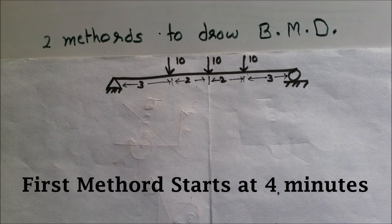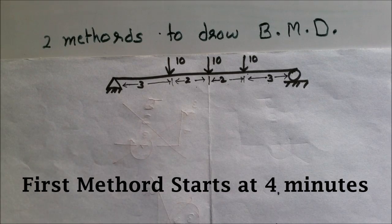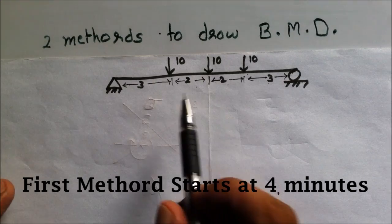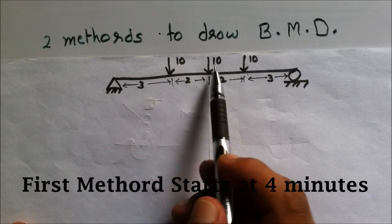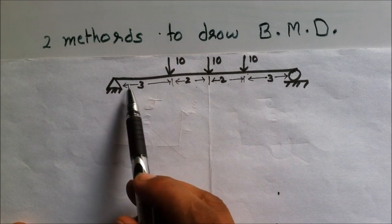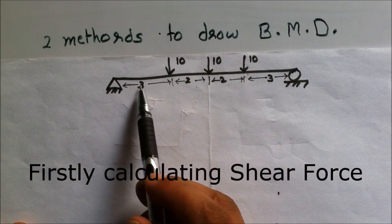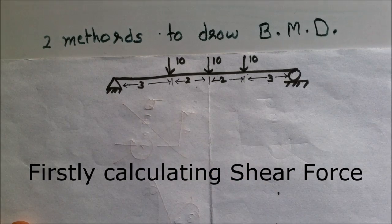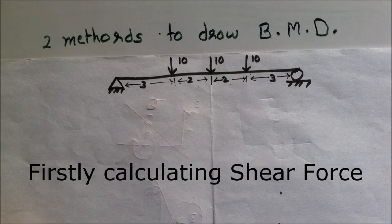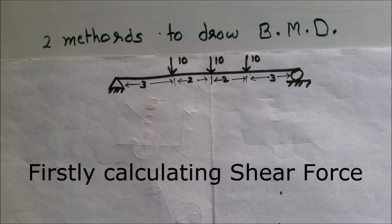Hi guys, welcome to Short Notes. In this lecture we will be discussing two methods to draw a bending moment diagram. Here we have a beam with three concentrated loads of 10 kilonewton at distances of 3 meters and 2 meters from the edges. For drawing the shear force diagram we need to know the reaction forces.